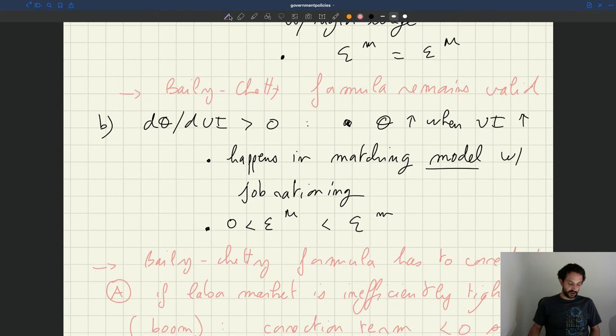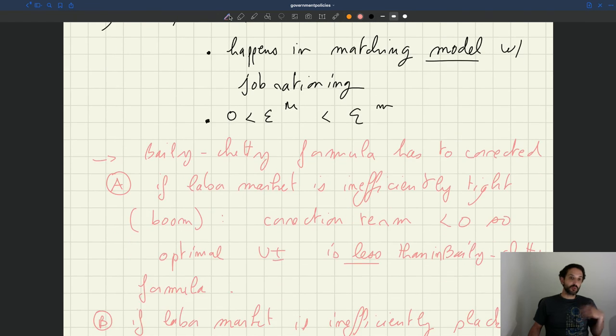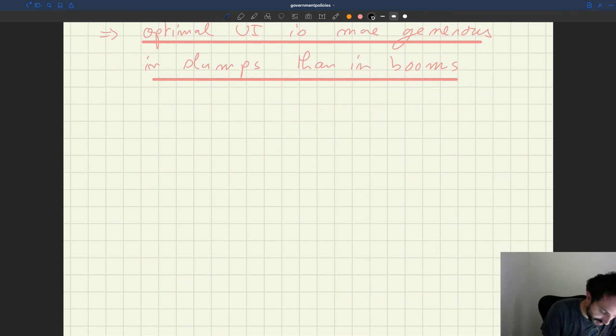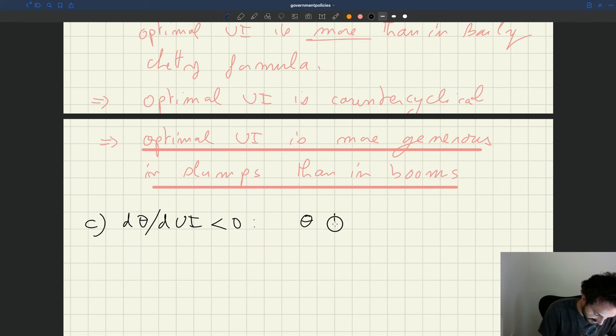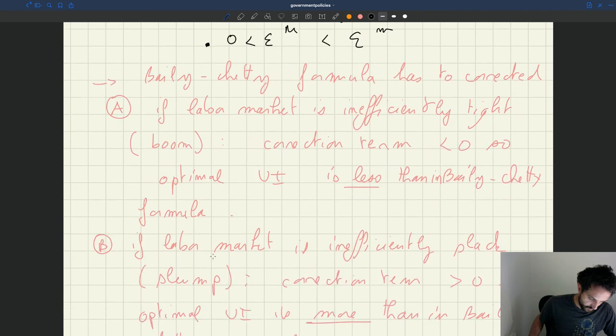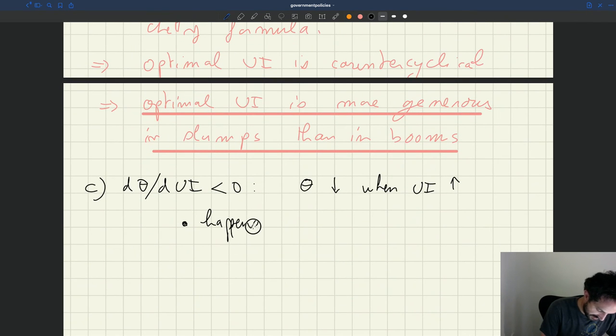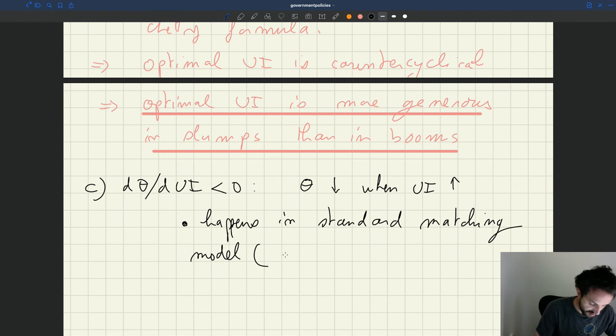So that's if you can establish that UI actually increases tightness. The last possible option is, just to wrap up what we said, is that, in fact, UI reduces tightness. So this is just the case that tightness goes down when UI goes up. And so this is possible. This is what happens in the standard matching model, a model with wage bargaining plus linear production function.